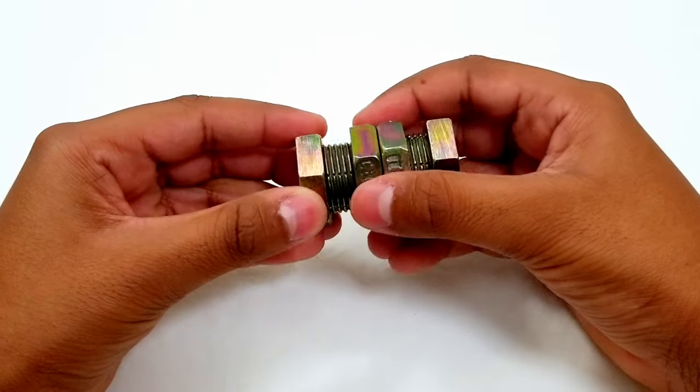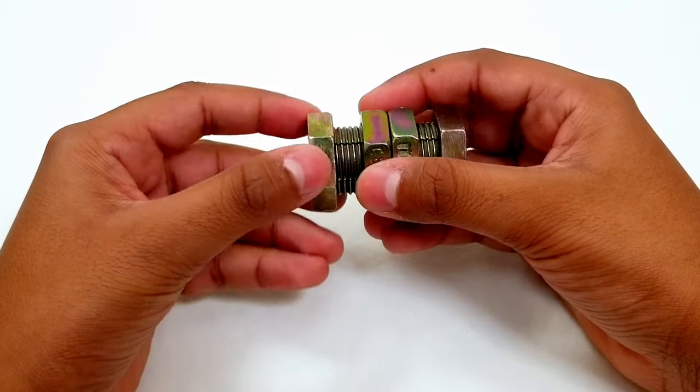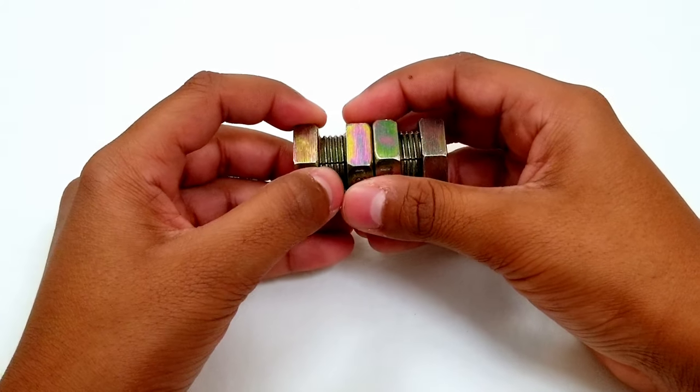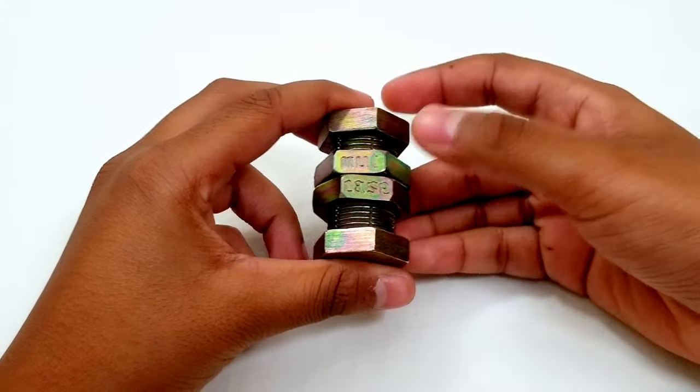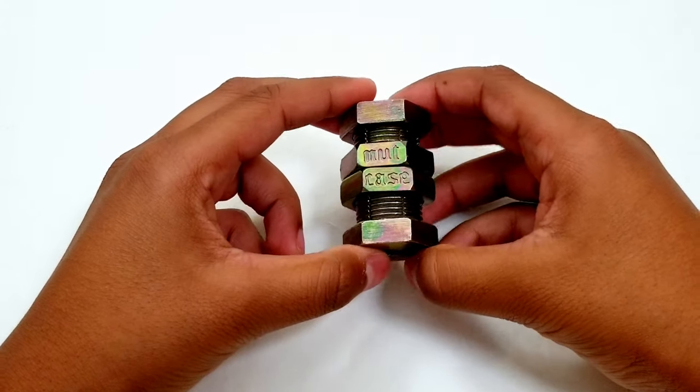When you look at the puzzle you can see that there are many lines. Some are real lines and others are line cuts. These lines are really important to solve the puzzle. Now let's solve the puzzle.